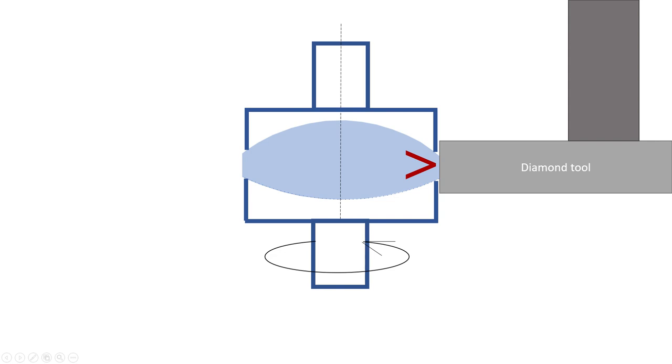However, in order for this to work, the edge of the cup supporting the lens has to be very round and very well centered to the rotation axis. Otherwise, the bottom side of the lens is not centered correctly and we can never make a good lens.